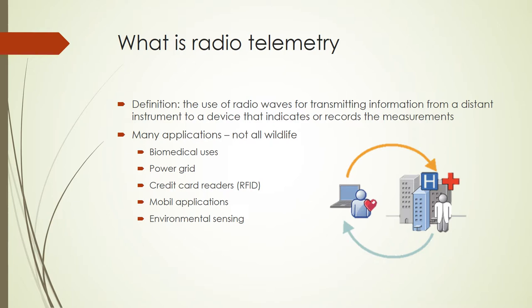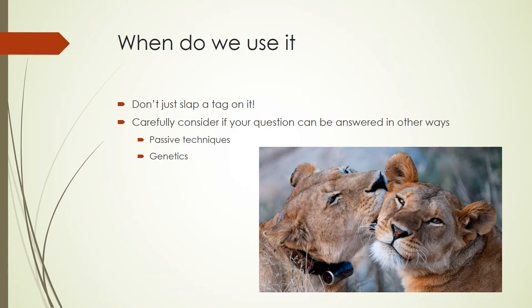Where this technology has really found a lot of ground for us is in environmental sensing and specifically in tracking animal movement. For our purposes, wildlife telemetry is any time we're putting a tag on an animal that allows us electronically to either recapture, refind, or identify it later.